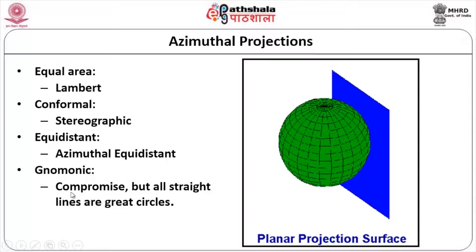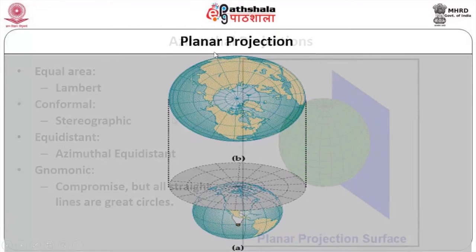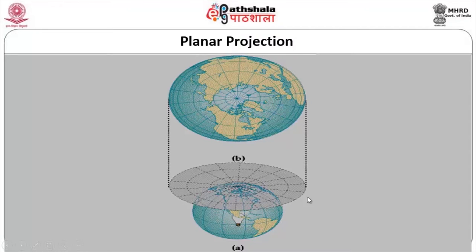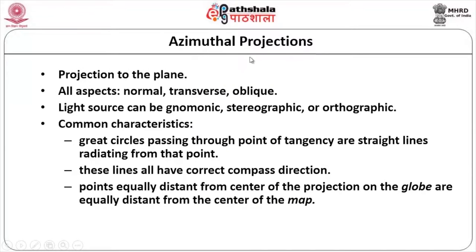There are several types: equal area, conformal stereographic, and equidistant (azimuthal equidistant), and gnomonic projection where all straight lines are great circles. In the planar projection, the globe has a planar surface touching at the pole. When the light source falls through the globe, the output is projected — the pole and various land and water surfaces are projected onto the planar surface.